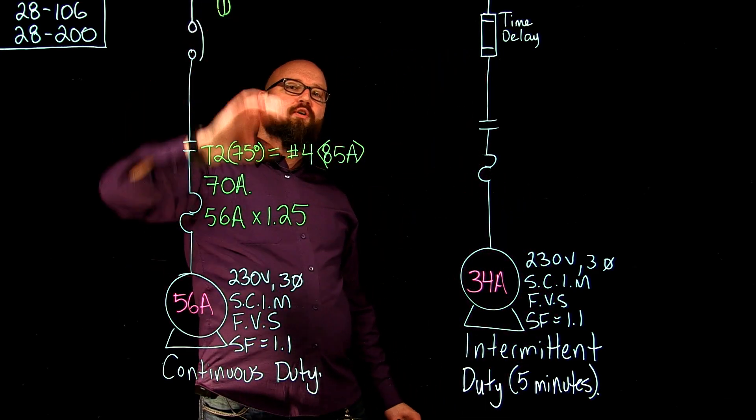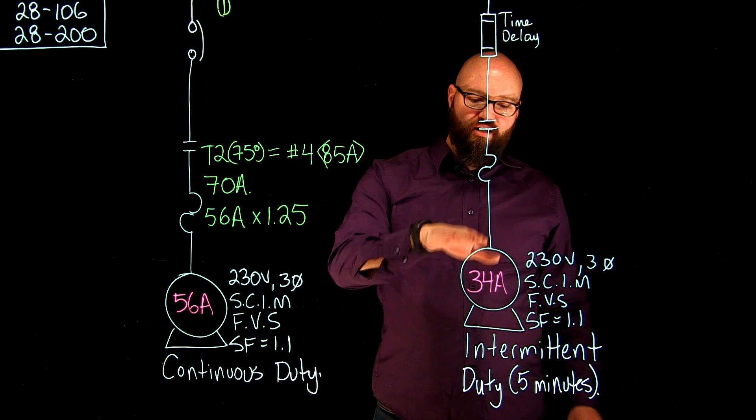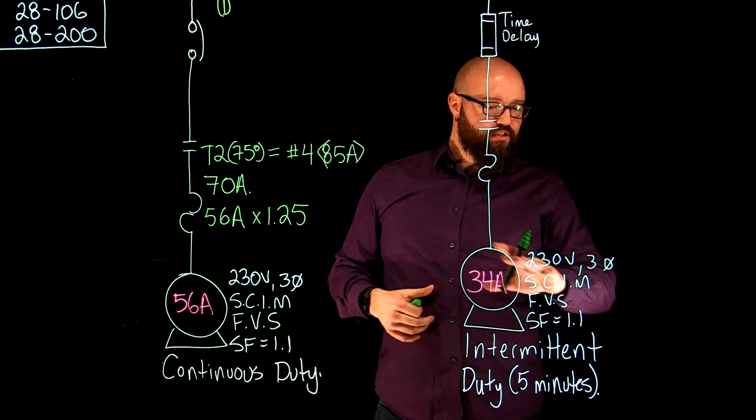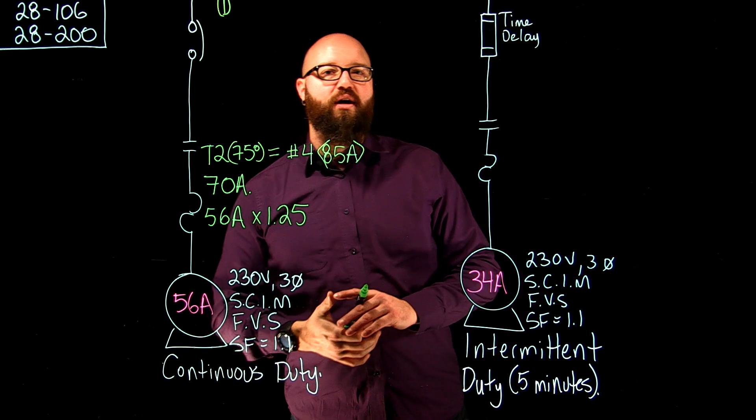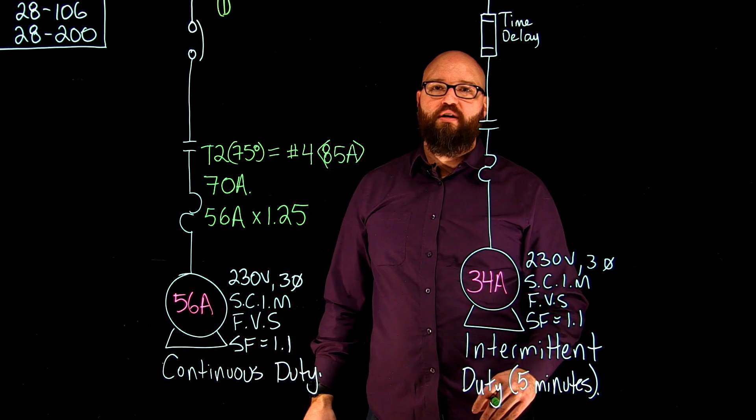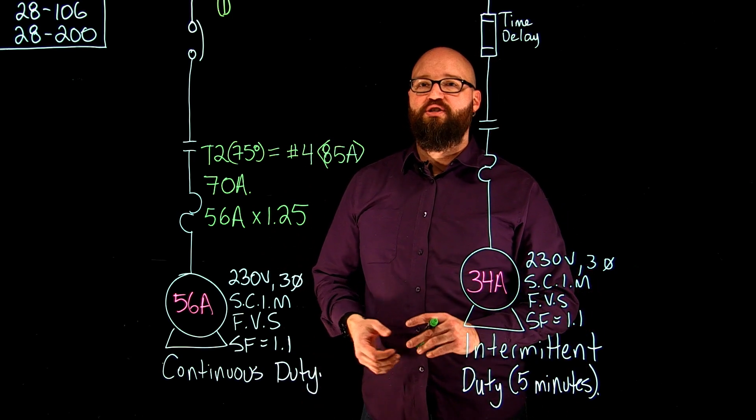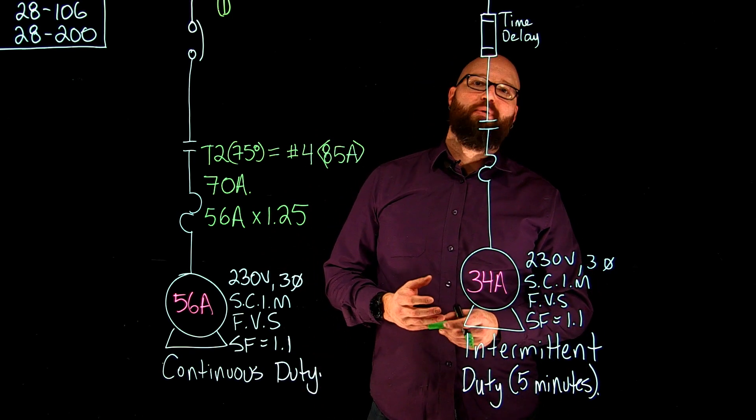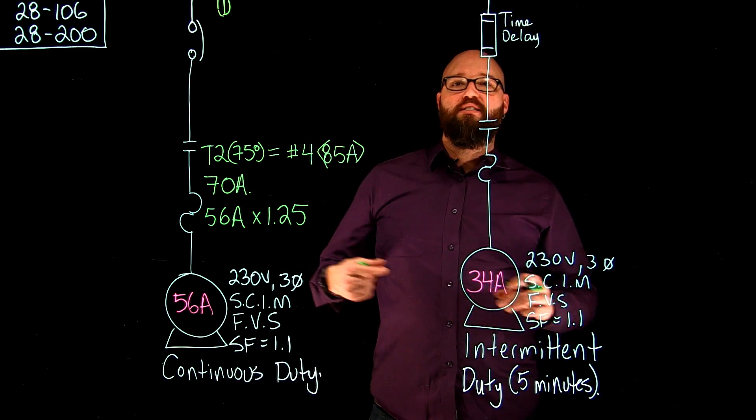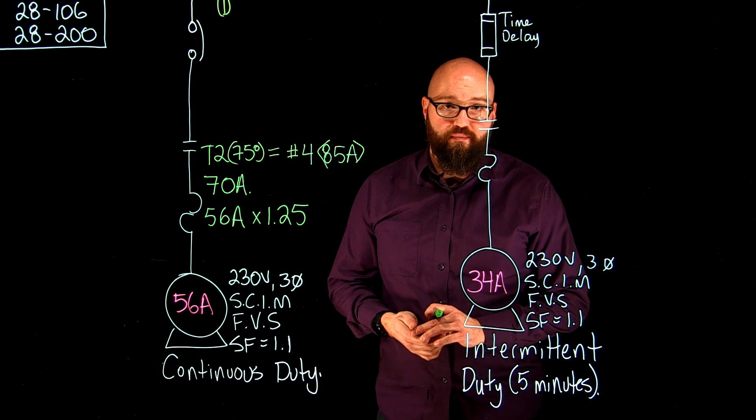Then we're going to move over before we move to the overcurrent on this branch. We're going to go over here and we're going to size the conductor for the branch circuit feeding this motor here as well. Again, 230 volt, three phase squirrel cage induction, and it has the full voltage start. I've got the service factor marked of 1.1, but it tells me in this motor it's an intermittent duty, which now we're saying that it's not expected to be on all the time. And because of that, we're going to have correction factors that we can apply to the FLA of the motor.